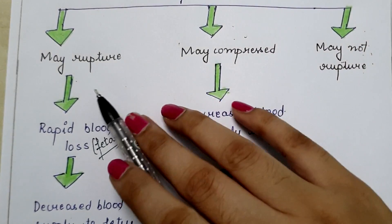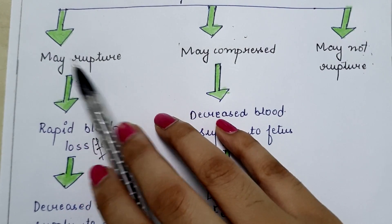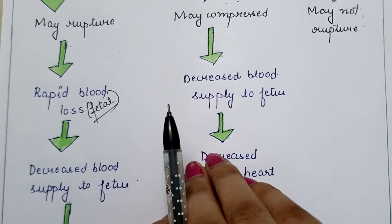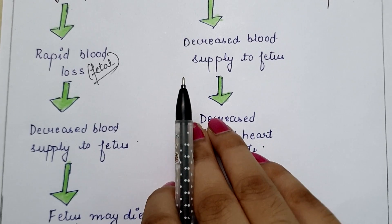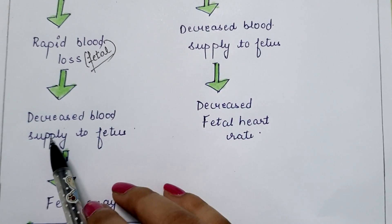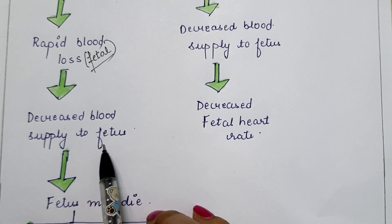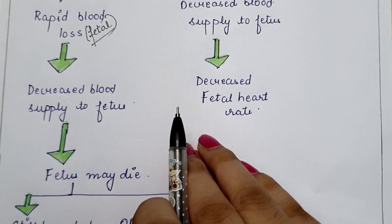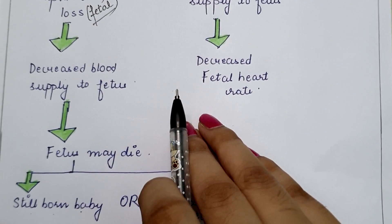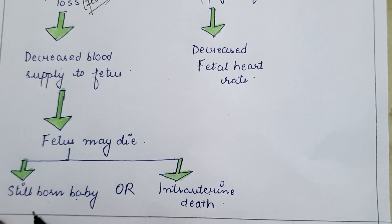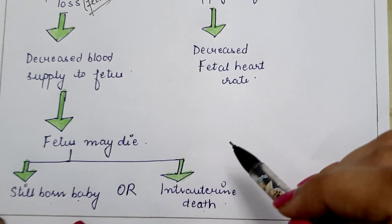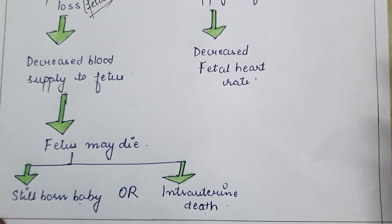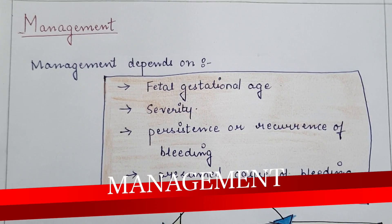Third possibility: the fetal blood vessels may rupture. If they rupture, there will be a rapid fetal blood loss, causing decreased blood supply to the fetus, leading to fetal exsanguination. This results in a stillborn baby — that is, the baby born dead — or intrauterine death. These are the complications of vasa previa.